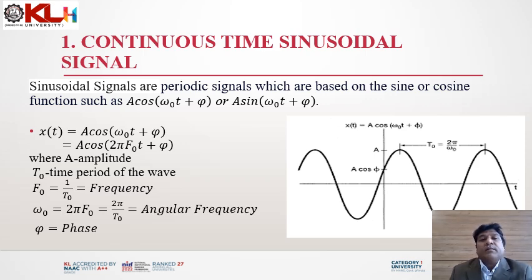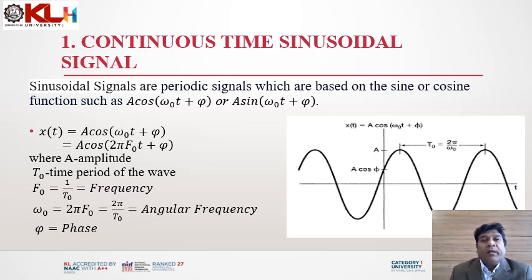Now we are going to discuss continuous time sinusoidal signals. Sinusoidal signals are periodic signals which are functions of either sine or cosine, given by A cos(ω₀t + φ). Here ω₀ is the angular frequency, t is the continuous time, and we can write ω₀ = 2πf₀, where f₀ is the frequency. The frequency f₀ equals the reciprocal of the time period T₀. In the diagram, we can note down the time period T₀ as the distance between two peaks of the cosine waveform.